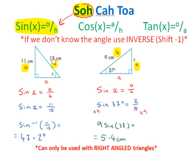Since we have o and h, we're going to use SOH, which represents sine of x equals o divided by h. We write out the formula: sine of x equals o over h, then substitute — swapping o for 11 and h for 15. Since we don't know the angle, we use the inverse function: press shift and sine on the calculator, so sine to the power of minus 1 comes up. We enter 11 over 15, close the bracket, press equals, and get 47.2 degrees, rounded to one decimal place.